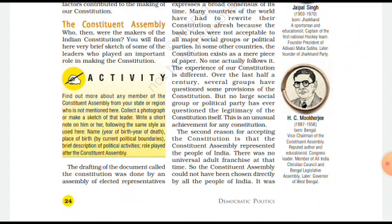Both these documents included features such as universal adult franchise, the right to freedom and equality, and protecting the rights of minorities in the constitution of independent India. These basic values were accepted by all leaders much before the Constituent Assembly met to deliberate on the constitution.